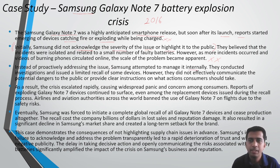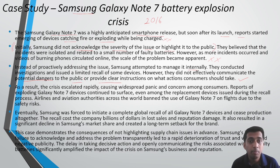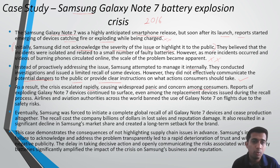Instead of proactively addressing the issue, Samsung attempted to manage it internally. They conducted investigations and issued a limited recall of some devices, but did not effectively communicate the potential dangers to the public or provide clear instructions on what actions consumers should take. As a result, the crisis escalated rapidly, causing widespread panic. Reports of exploding Galaxy Note 7 devices continued to surface even among replacement devices, and airlines had to ban the use of the Galaxy Note 7 on flights.